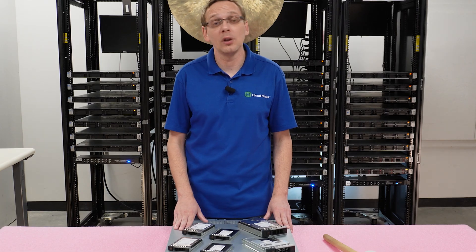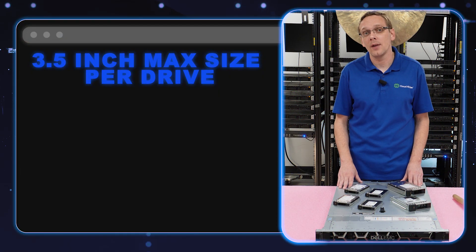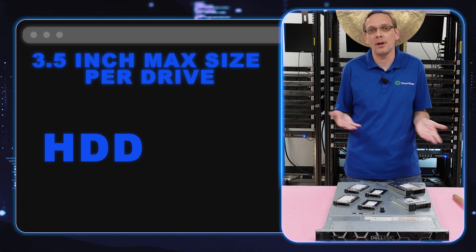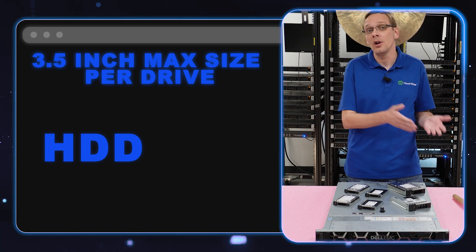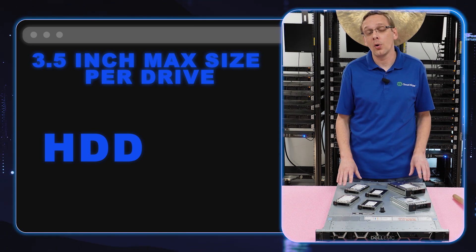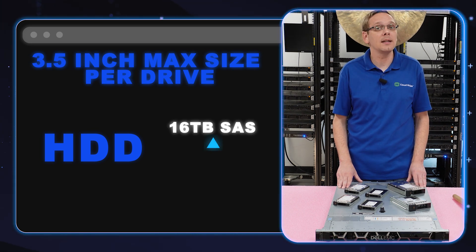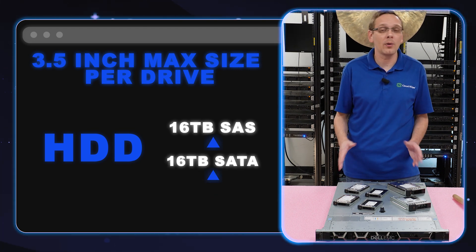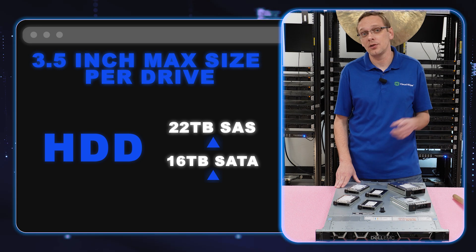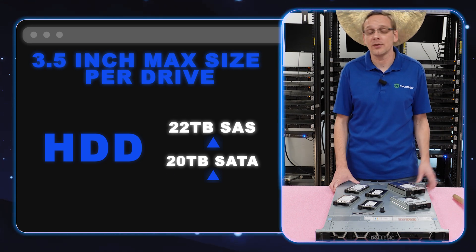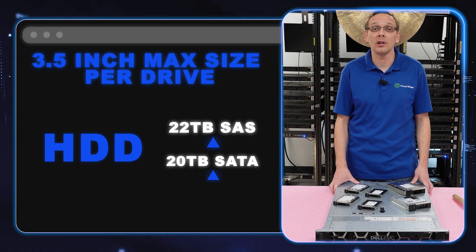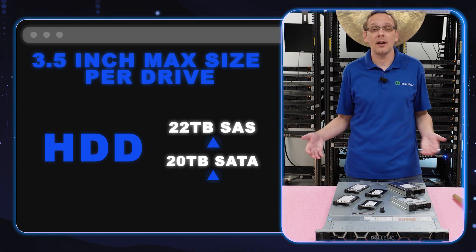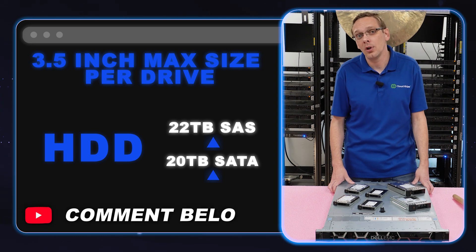On the large form factor side, the big advantage is that you can get really large sizes cheaply compared to SSDs or small form factor hard drives. According to the Dell spec sheet, you can get 16 TB on SAS and 16 TB on SATA 3.5 inch hard drives. We've tested 22 TB on SAS and 20 TB on SATA, and I wouldn't be surprised if someone has put in even larger drives — drop a comment below if you have.